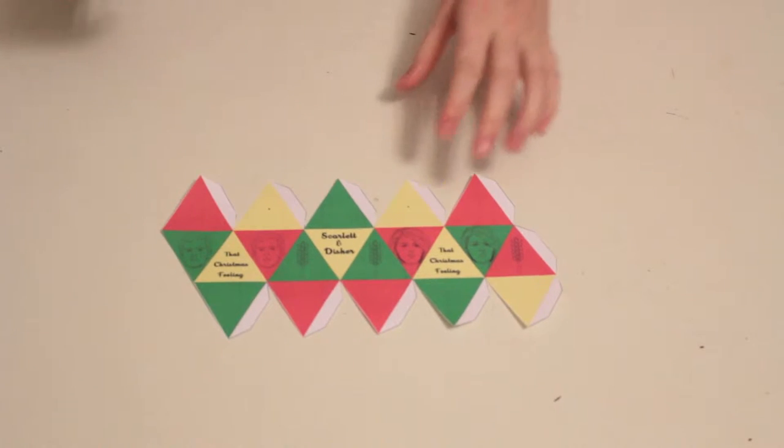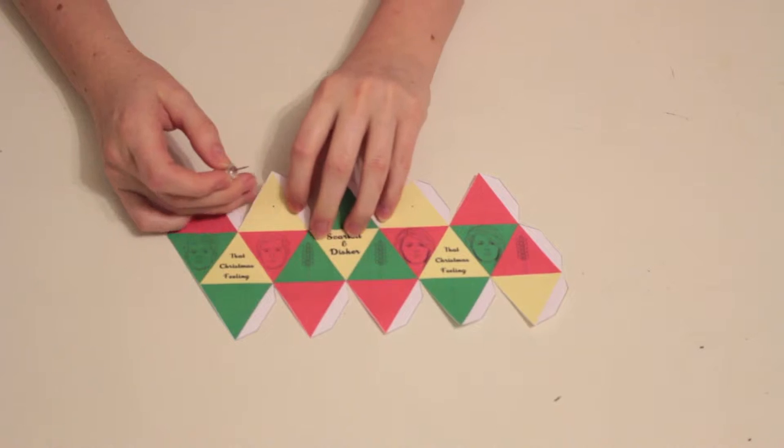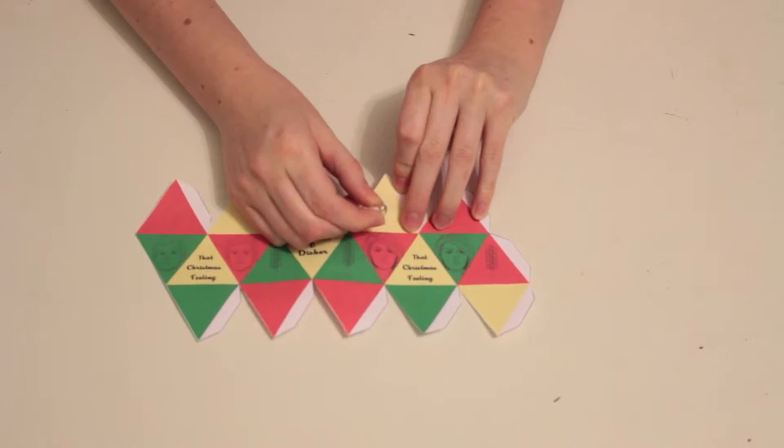Then, poke holes in the two black dots on the cream-colored triangles. Make sure the holes are wide enough for your thread to fit through.